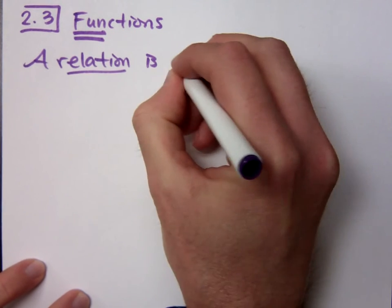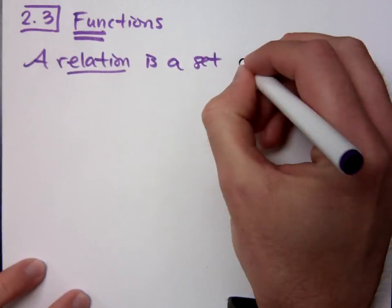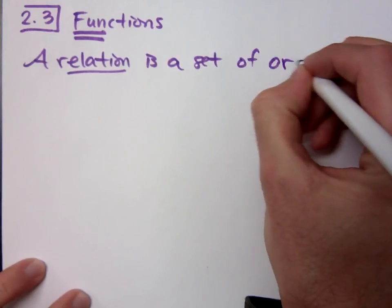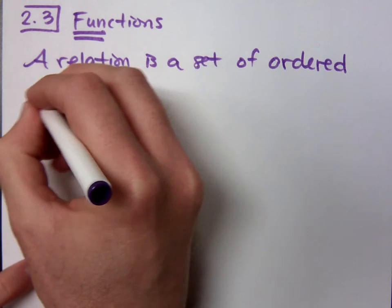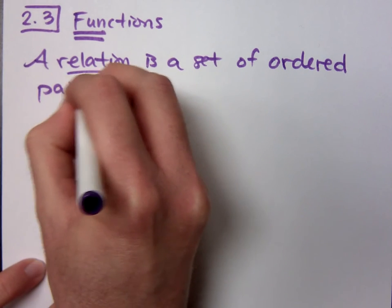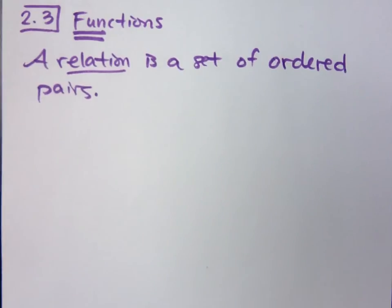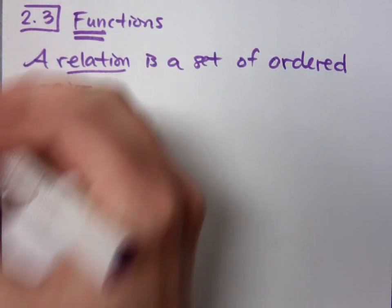A relation is a set of ordered pairs. A set is the same thing as a collection, it's just a big group, a big ensemble of ordered pairs.